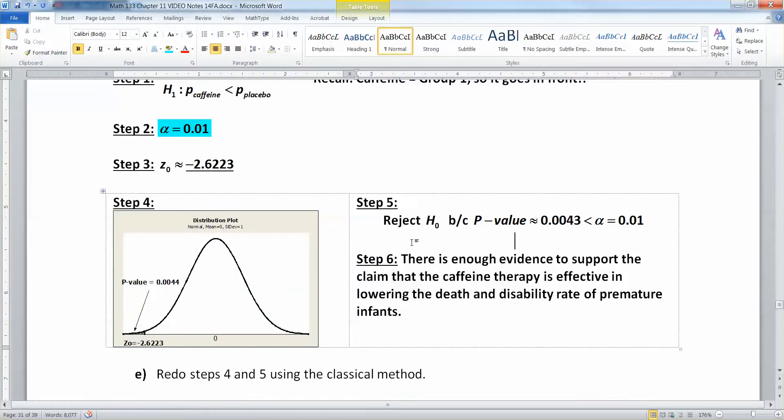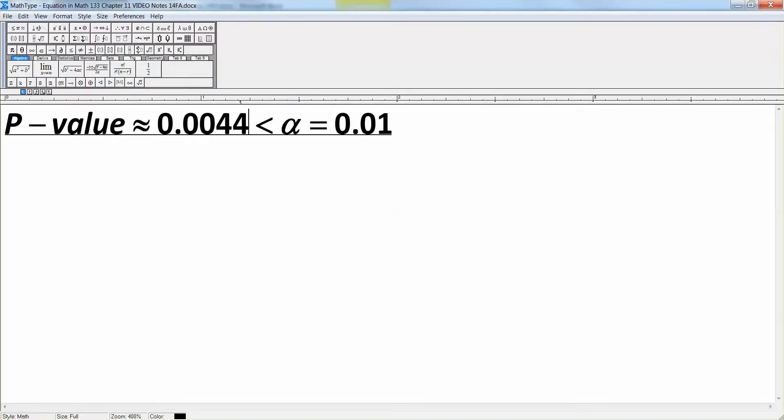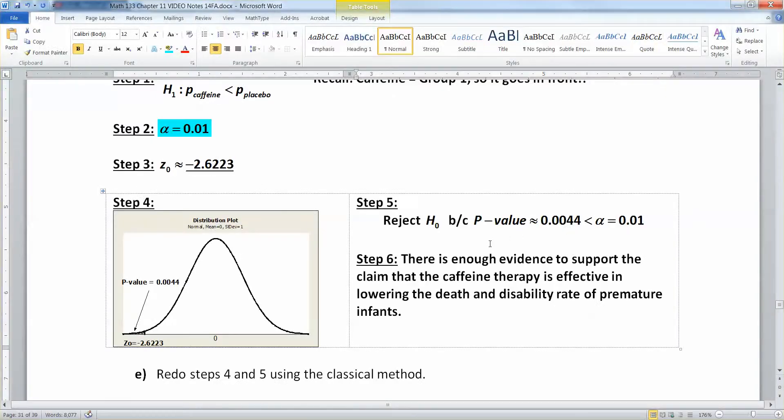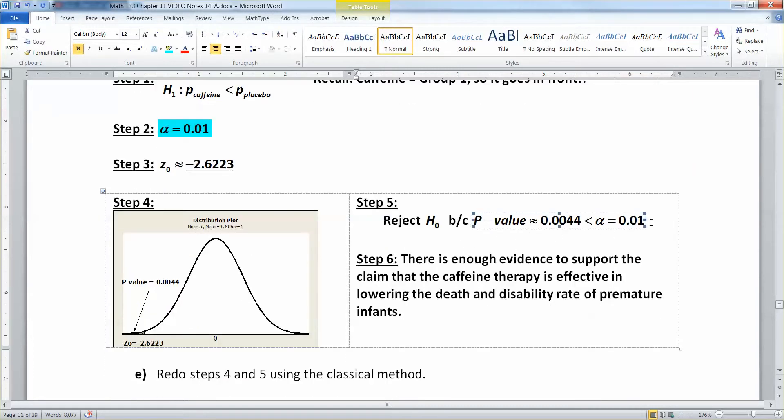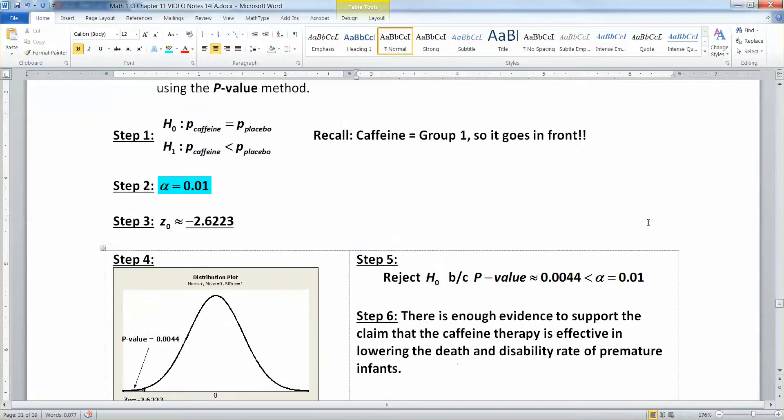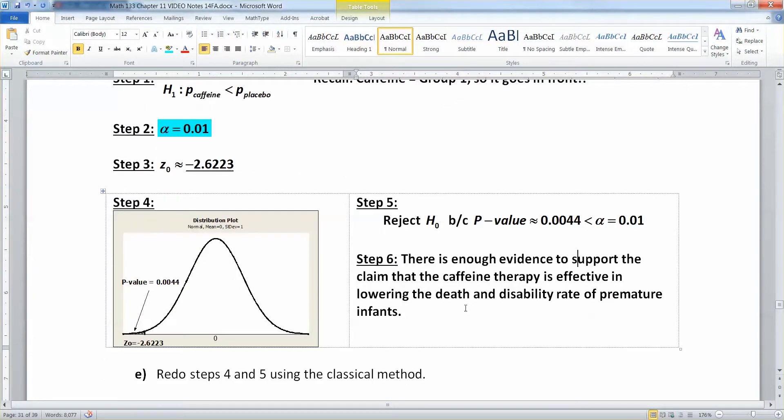And this means you're going to reject the null hypothesis, because we always reject when our P value is low. And the lower, the better. We always want the P value as low as it can go, because that means you're more likely to reject the null hypothesis. So we reject because even though our alpha was pretty low, which is pretty common in a medical study, they want a low level of significance because they want to make sure they don't do a lot of false positives.